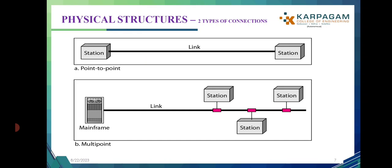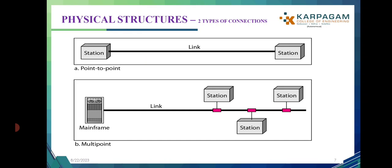Topology is the geometric representation of the relationship of all the links and linking devices. The different types of topology are mesh topology, star topology, bus topology, and ring topology. In mesh topology — a fully connected topology — for example with five stations, all stations are interconnected with each other by means of point-to-point connections. Every device has a dedicated point-to-point link to every other device.